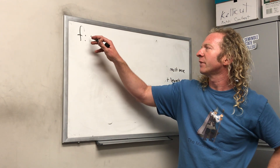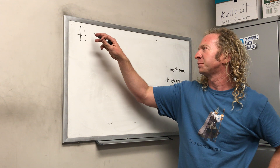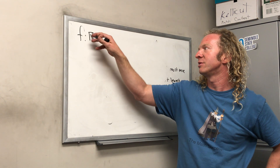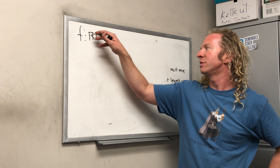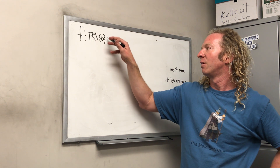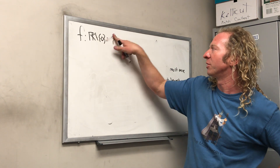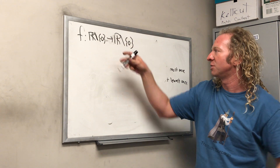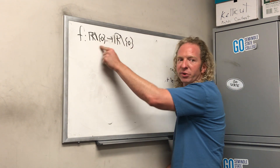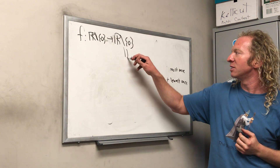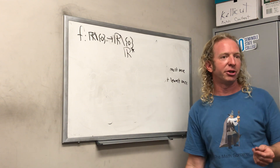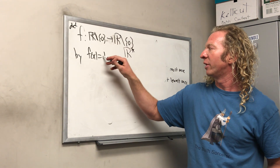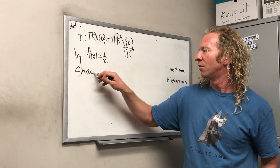Let's do a simple example of showing a function is onto. We have f from ℝ \ {0} — the non-zero real numbers, also written ℝ* — to ℝ \ {0}, defined by f(x) = 1/x. Let's show it's onto.